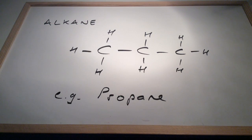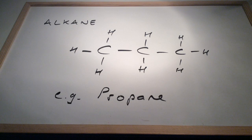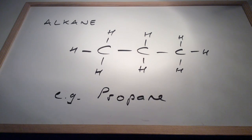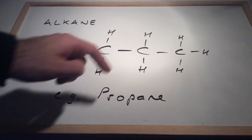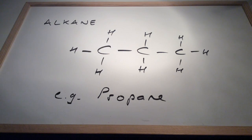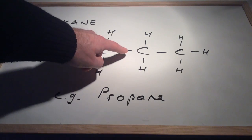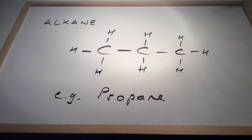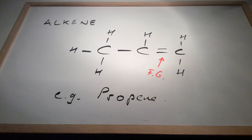I'm going to go through the eight homologous series studied at AS, pointing out the functional groups, using the three-carbon version of each. Starting with the alkanes: the three-carbon alkane is propane. Alkanes don't have a functional group — it's basically just carbon-carbon single bonds filled up with hydrogen. Carbon can form four bonds: at each end, carbon is bonded to three hydrogens with the fourth bond to the next carbon; the middle carbon has two hydrogens. Then we've got the three-carbon alkene, propene, with the carbon-carbon double bond labelled as the functional group.